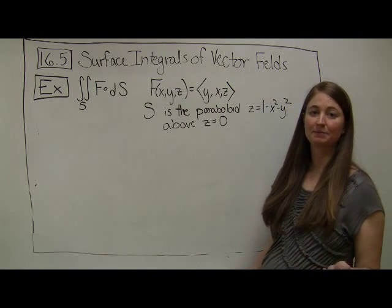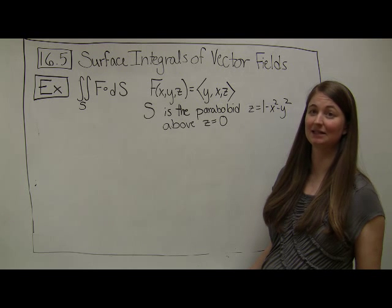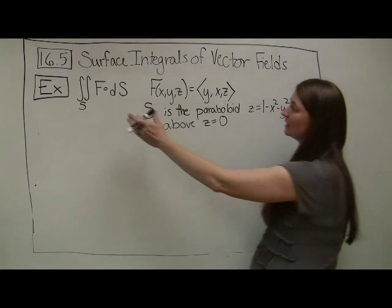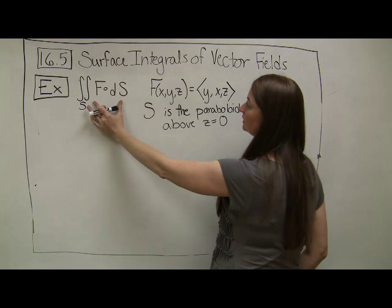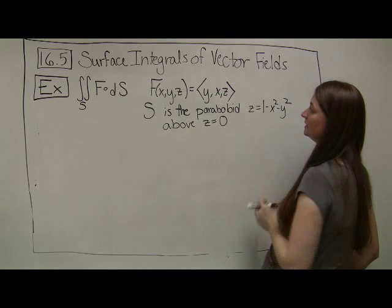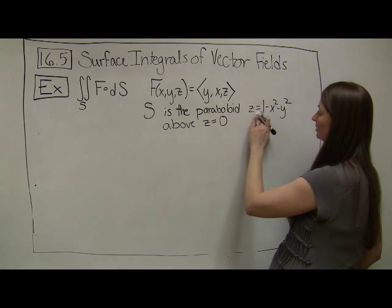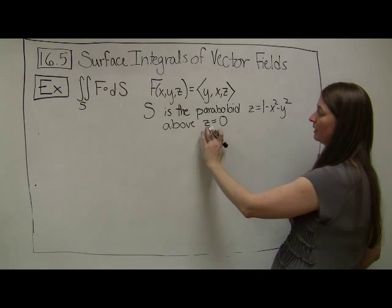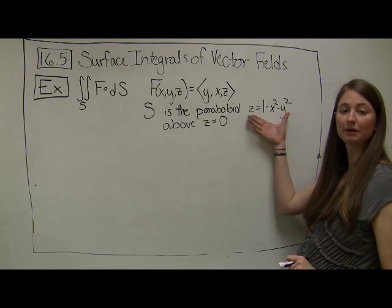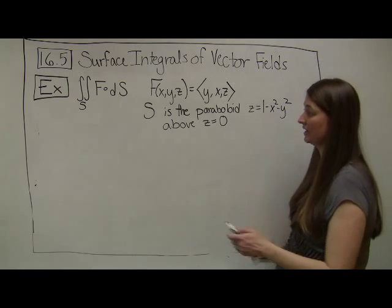My next and final example for today is computationally messy but it shows us some important skills. We want to find the surface integral of a vector field given by (y, x, z), and our surface is the paraboloid z = 1 - x² - y² above z = 0. Notice that we weren't given a parameterization, so that will be our first step.